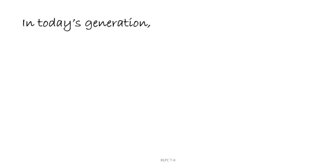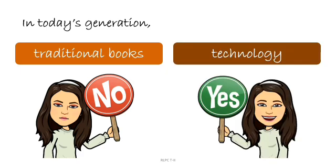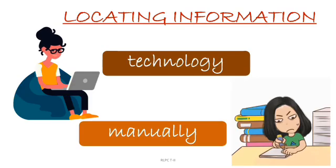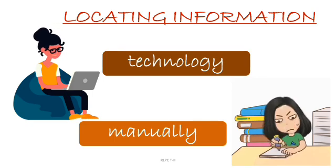In today's generation, mostly traditional books are out, and technology is in because of its easy access. In locating information, technology has indeed done a great job in making things possible and easier to do in a shorter amount of time compared to doing them manually.